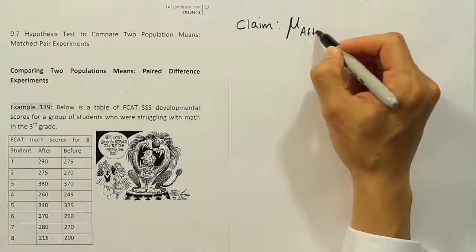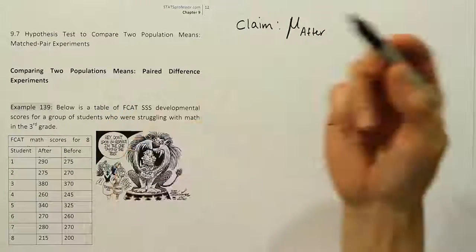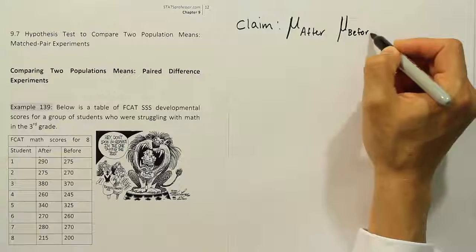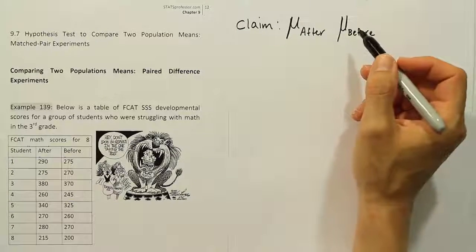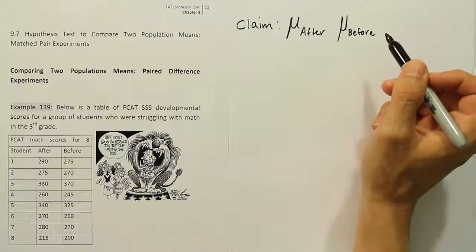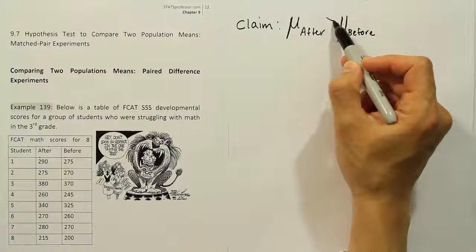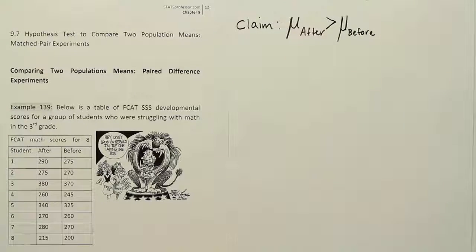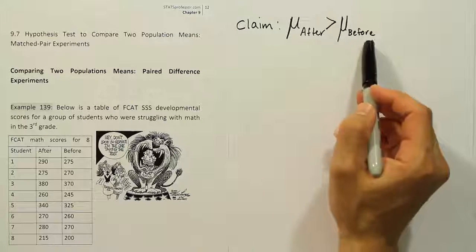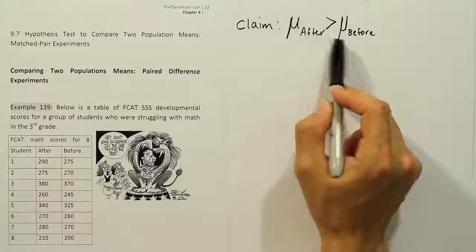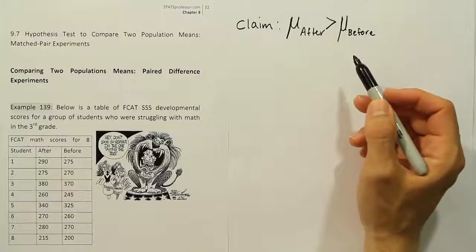Let's do mean after first, since the after column comes before the before column in the table, and then compare that to the mean before. Logically, if test prep is effective, your average test grade should be lower before the test prep and higher after. So 'greater than' is the proper symbol — the mean after is greater than the mean before. Before you would have a lower average, so it would be less than the after, or in other words, the after average would be higher than the before average.